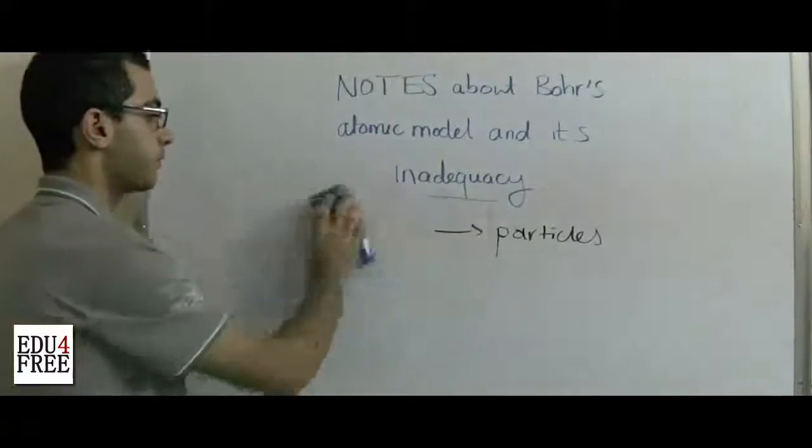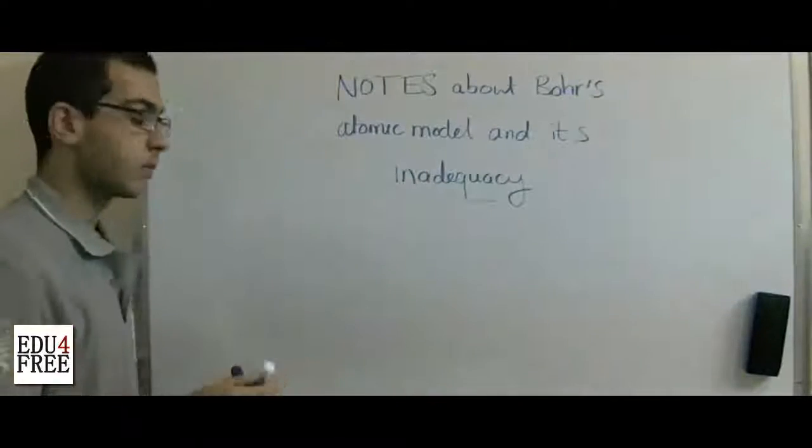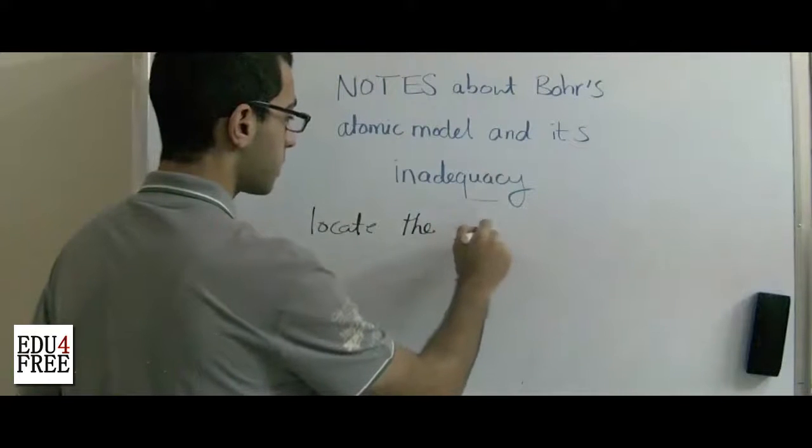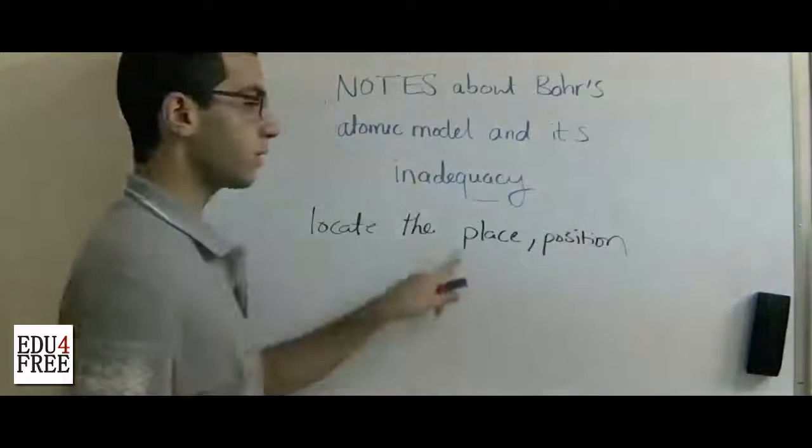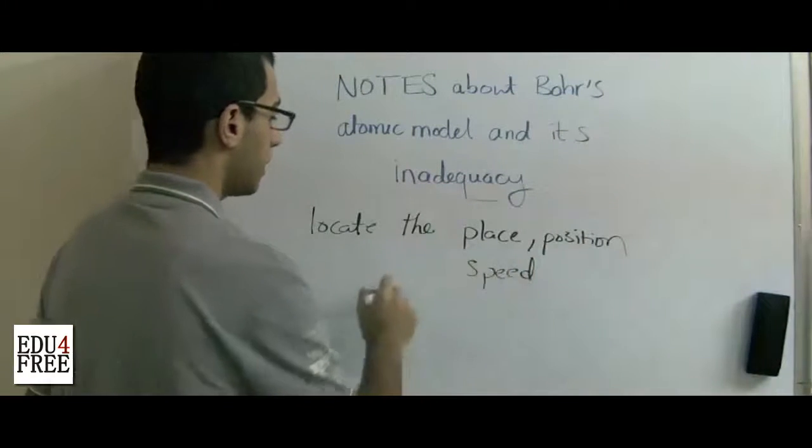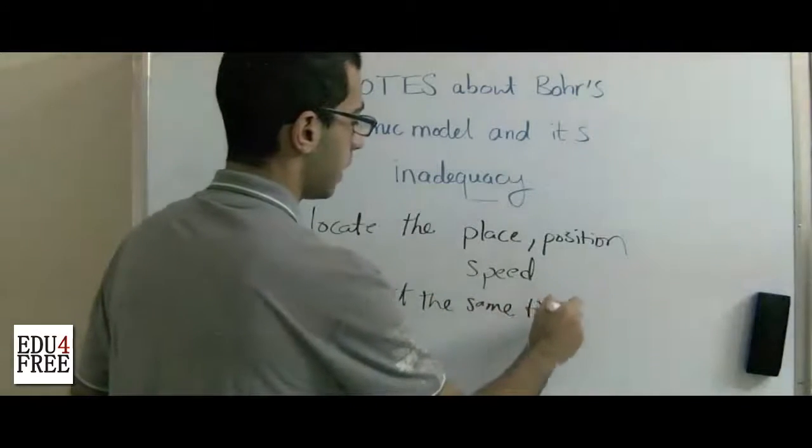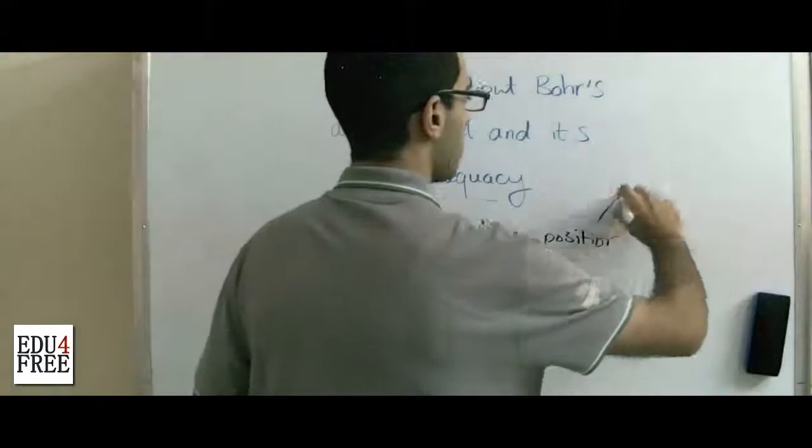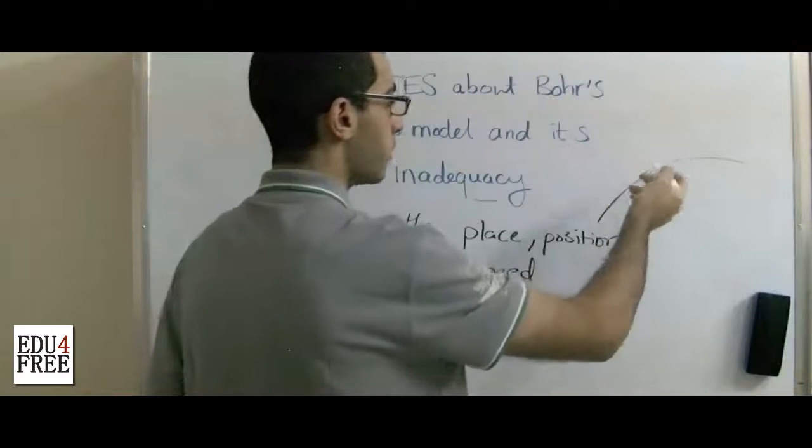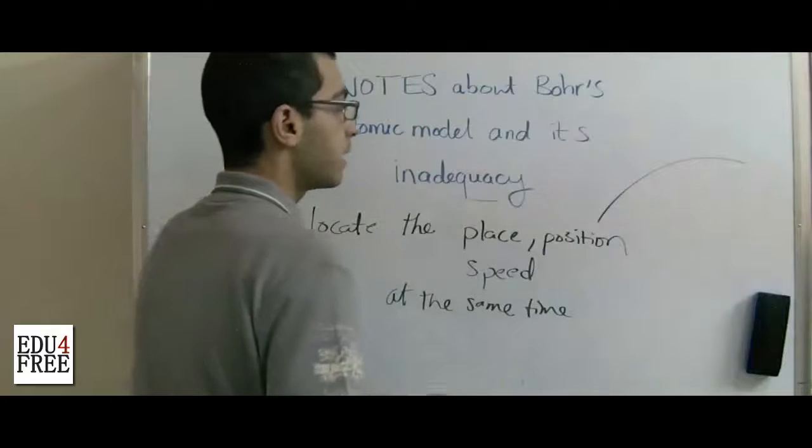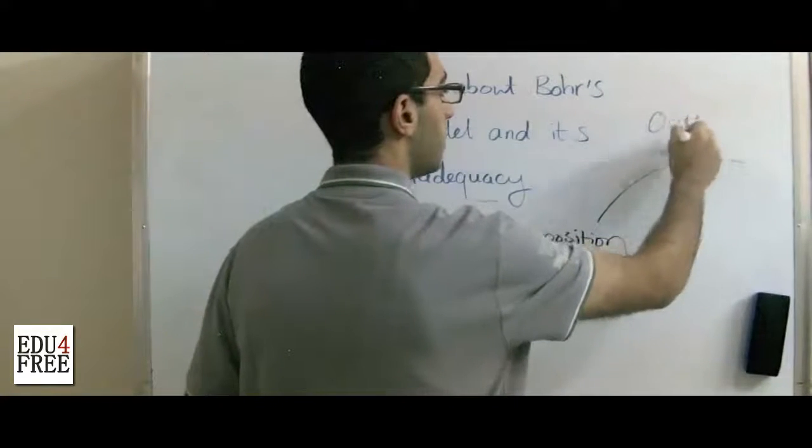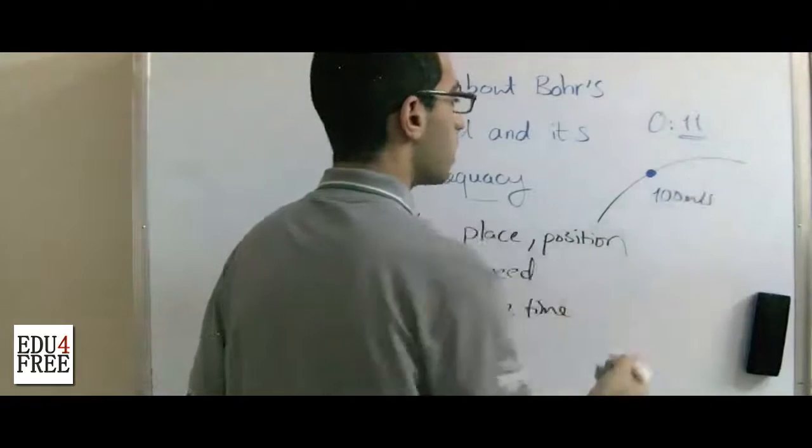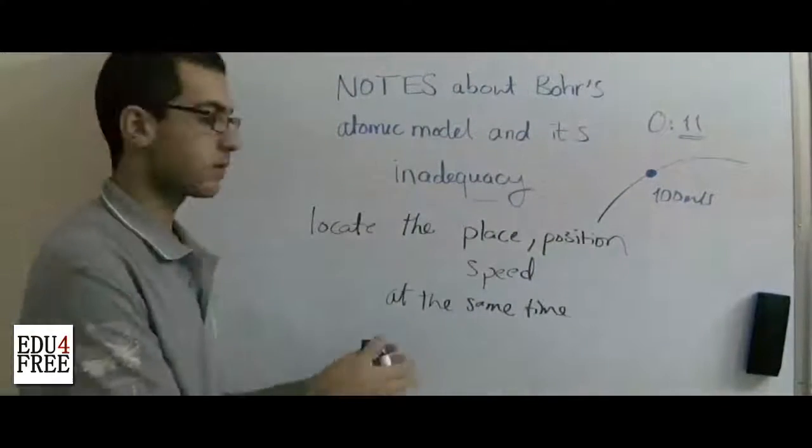Another thing is that Bohr said that it's possible to locate the place or the position of an electron and its speed at the same time, while this is practically impossible. For example, if I am noticing an electron orbiting in an energy level and I say at the 11th second I found the electron at that point and its velocity was say 100 meter per second. This is practically impossible, but he said that it's possible. Well, it wasn't.